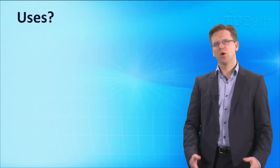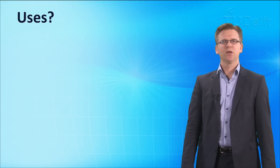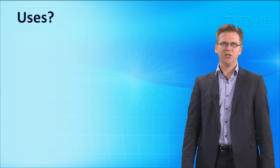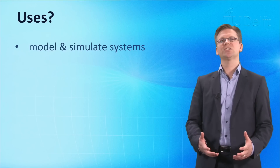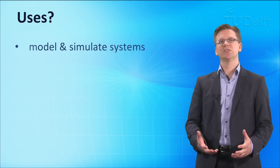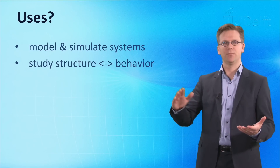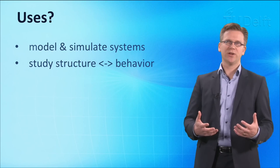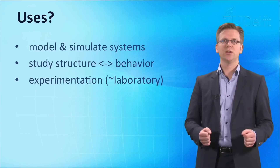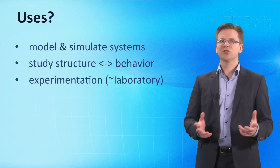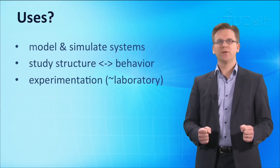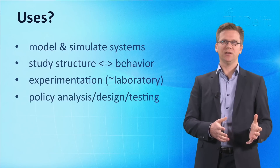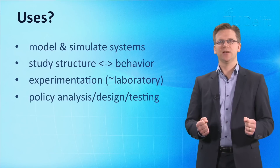So what is system dynamics used for? Quantitative system dynamics modeling is used to model systems and issues and to simulate their behavior over time. Models can then be used to experiment in a virtual laboratory. As such, system dynamics models are also extremely useful for model-based policy analysis and for adaptive policy design.